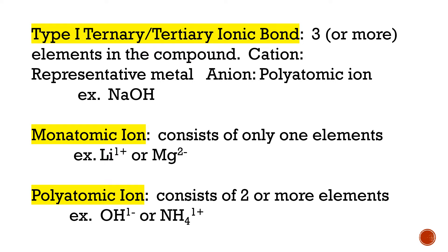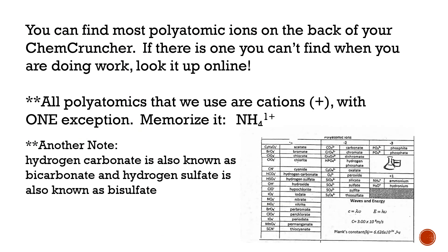Let me turn on my drawing pad here. You can kind of look at hydroxide as being in a little box — the whole thing has a 1− charge. Or you've got ammonium, NH4, with a 1+ charge. So that's a polyatomic ion.